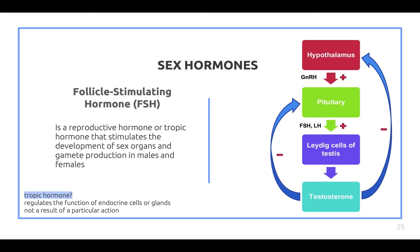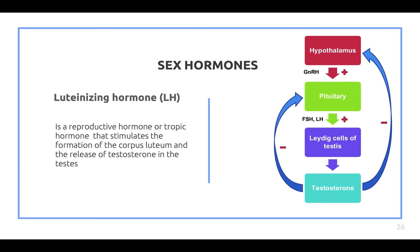FSH, follicle-stimulating hormone, is a reproductive tropic hormone. A tropic hormone regulates the function of endocrine cells or glands. FSH stimulates the development of sex organs and gamete production in both males and females. Luteinizing hormone, LH, is also a reproductive tropic hormone. In the female reproductive system it stimulates formation of the corpus luteum, but in the male reproductive system LH causes the release of testosterone in the testes.